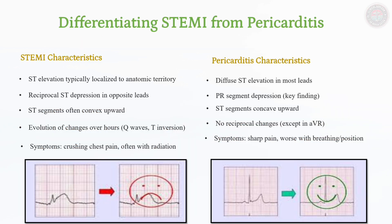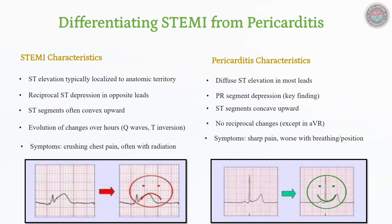Although both STEMI and pericarditis cause ST elevation, key differences help distinguish them. STEMI produces localized convex ST elevation with reciprocal changes and evolving Q waves. In contrast, pericarditis presents with diffuse ST elevation and PR depression without reciprocal ST depression. Unlike STEMI, pericarditis is often positional and relieved by sitting forward, preventing unnecessary emergent reperfusion therapy.